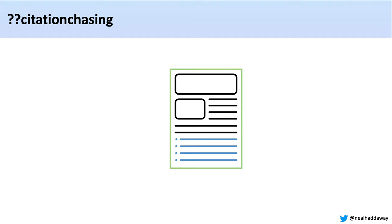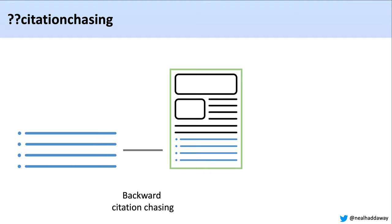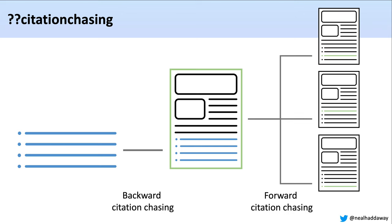So what is citation chasing? When thinking about how to retrieve articles for our evidence synthesis or meta-analysis, as well as searching bibliographic databases and grey literature, we might want to make use of the reference lists of a set of relevant articles, and also articles that cite a set of relevant records. Backward citation chasing is looking through a list of references of our articles, and forward citation chasing is looking at which articles cite our relevant articles to find potentially more information for our synthesis.